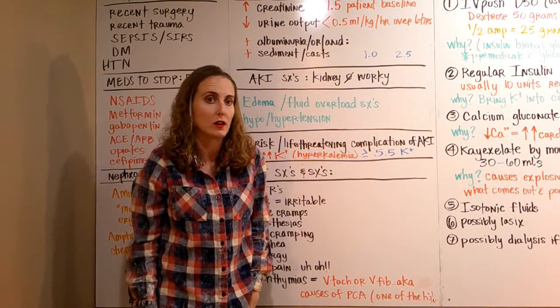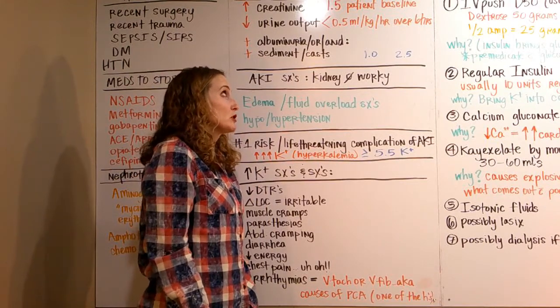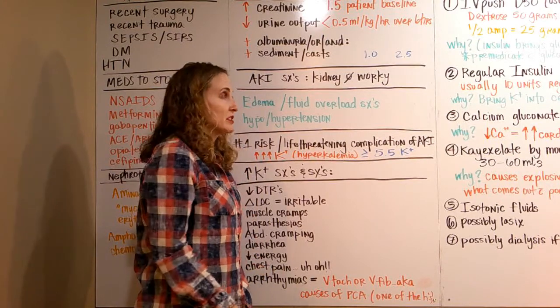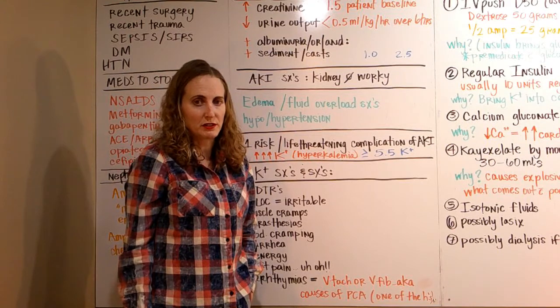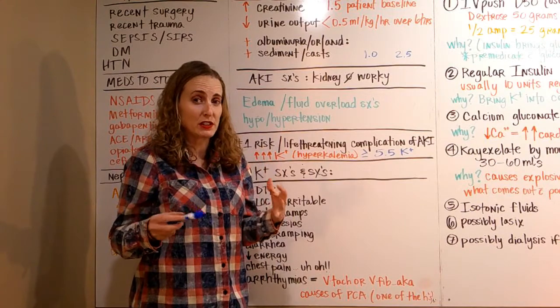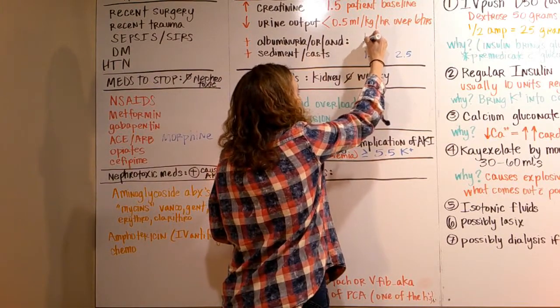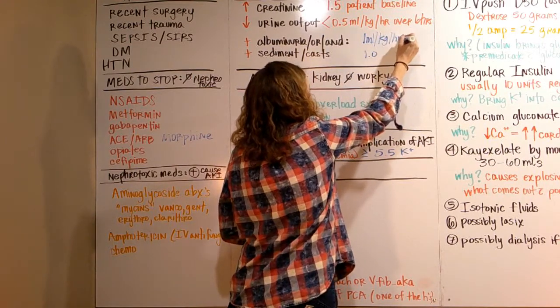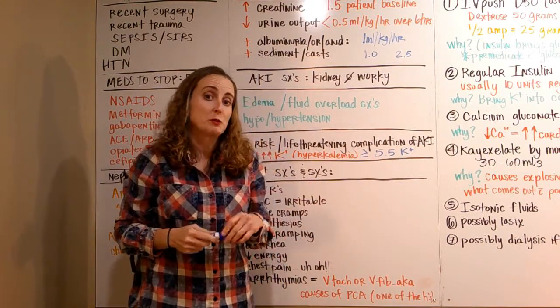If their urine output drops below 0.5 milliliters per kilogram per hour for a six-hour time period, that qualifies them as an acute kidney injury as well. Basically, we want urine output to be a minimum of one mil per kg per hour, and that's for adults.